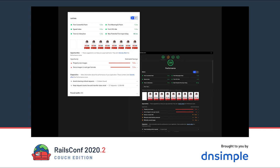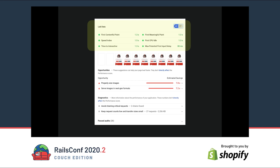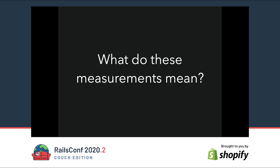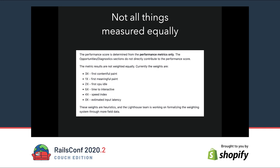If you've ever seen these tools, they look like this. They have several things — there are lists of opportunities in one section, and lists of diagnostics in another section. What we really want to focus on is the top six listing of measurements from the lab data. I don't want to go too deep on this because this is RailsConf and I want to talk about Rails and Active Storage, but I'll shortcut you some documentation reading. It's important to note that not all the measurements are created equal — some are weighted very differently, much higher or much lower than others.